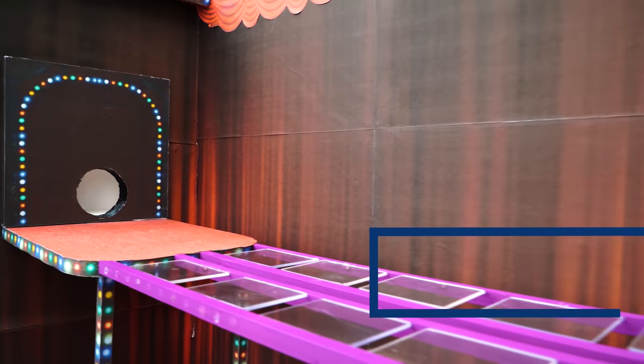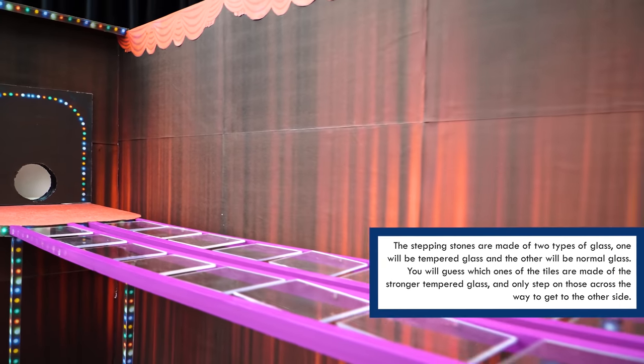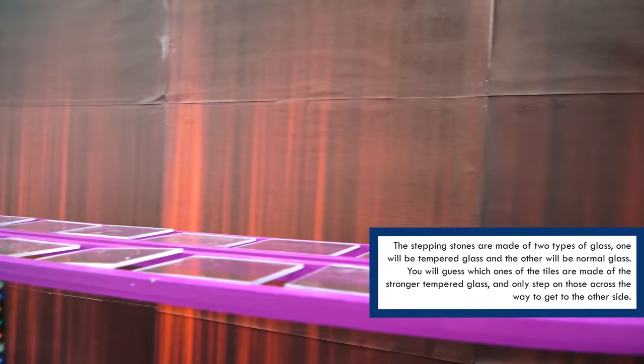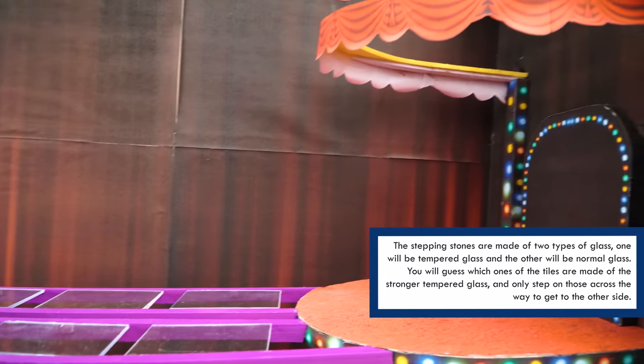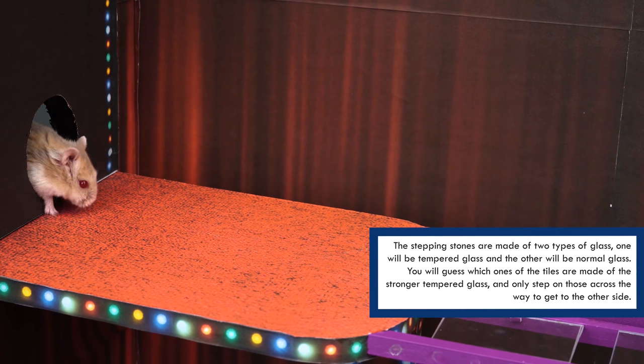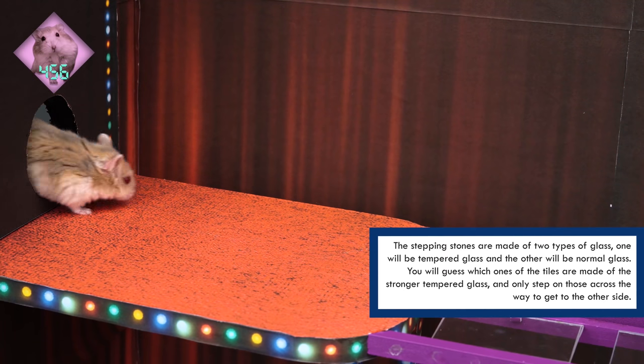Eliminated. Let's begin the fifth game. The stepping stones are made of two types of glass. One will be tempered glass and the other will be normal glass. You will guess which ones of the tiles are made of the stronger tempered glass and only step on those across the way to get to the other side.